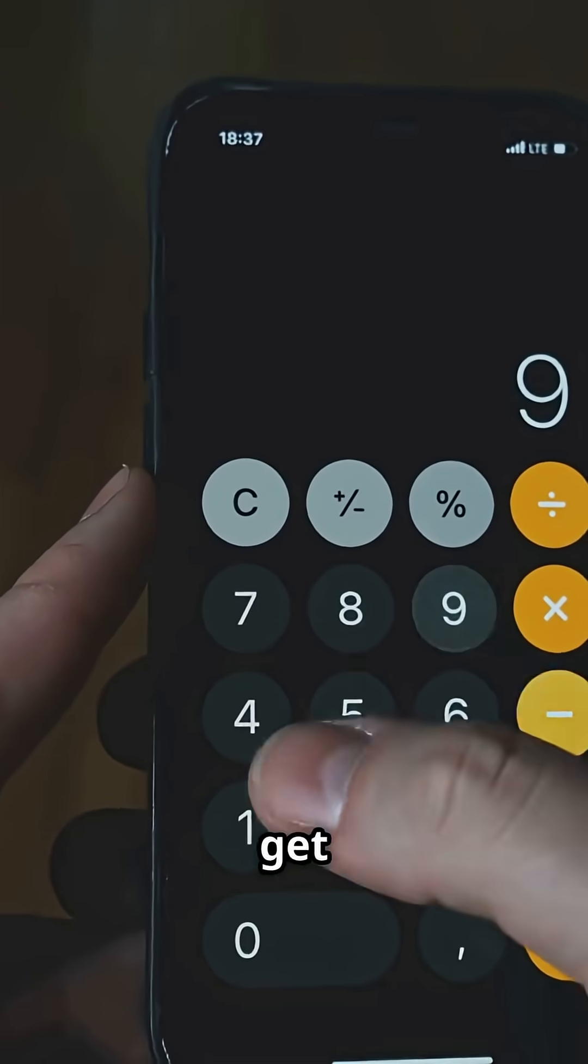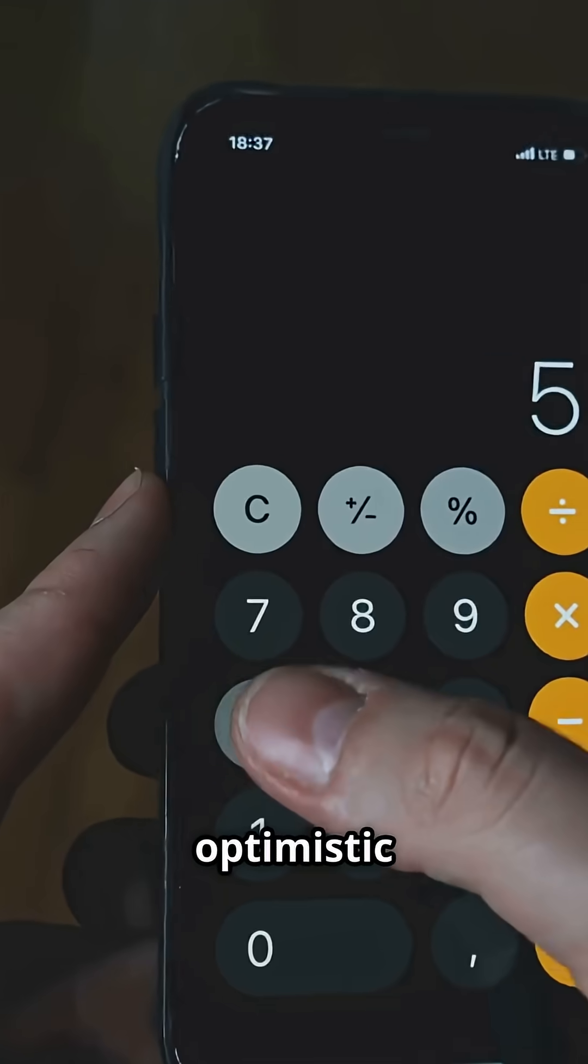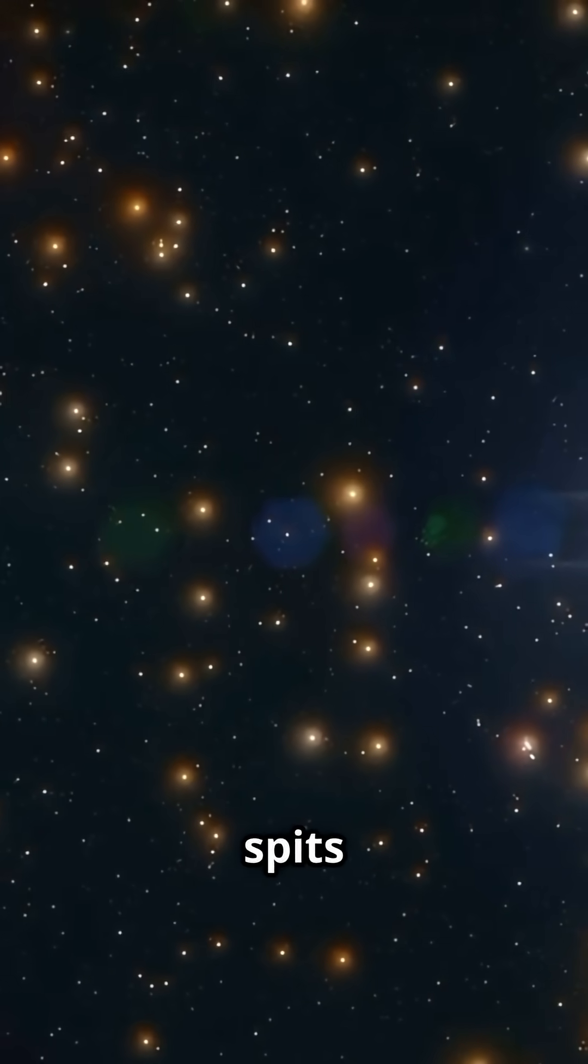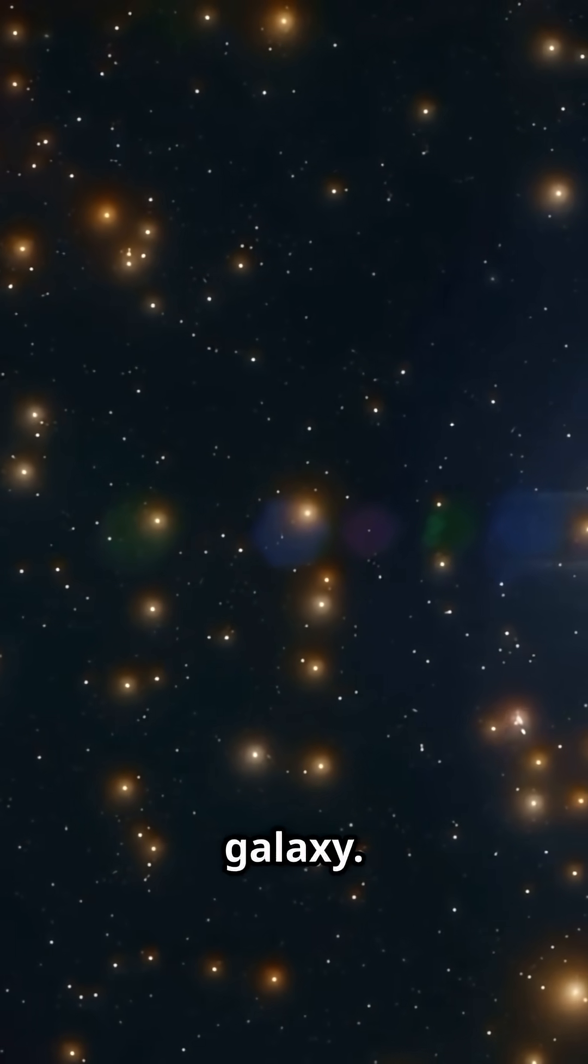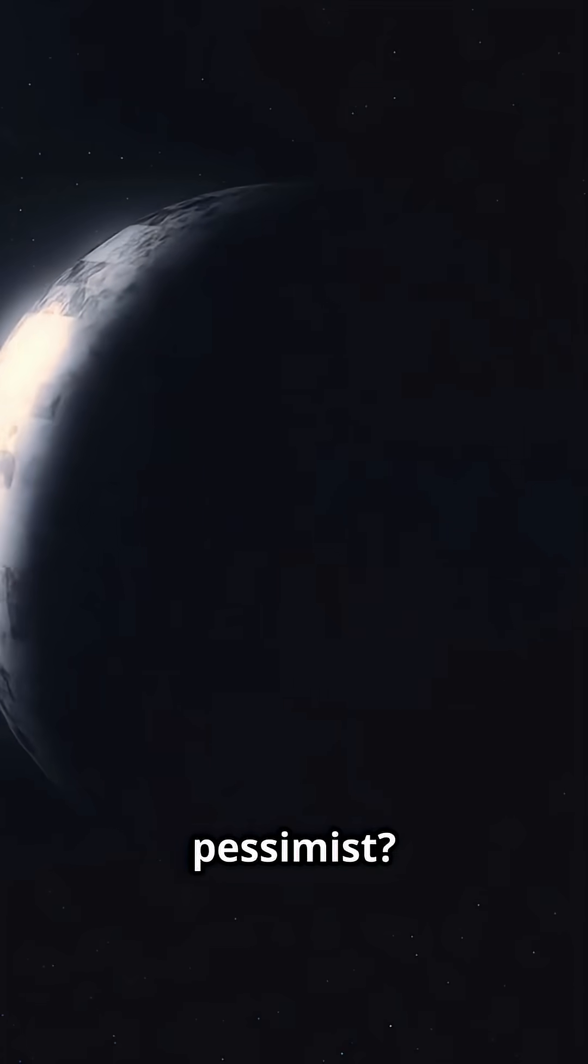Now here's where things get spicy. Plug in some optimistic numbers and the Drake equation spits out around 10,000 civilizations in our galaxy. But if you're a pessimist, maybe just one. Us.